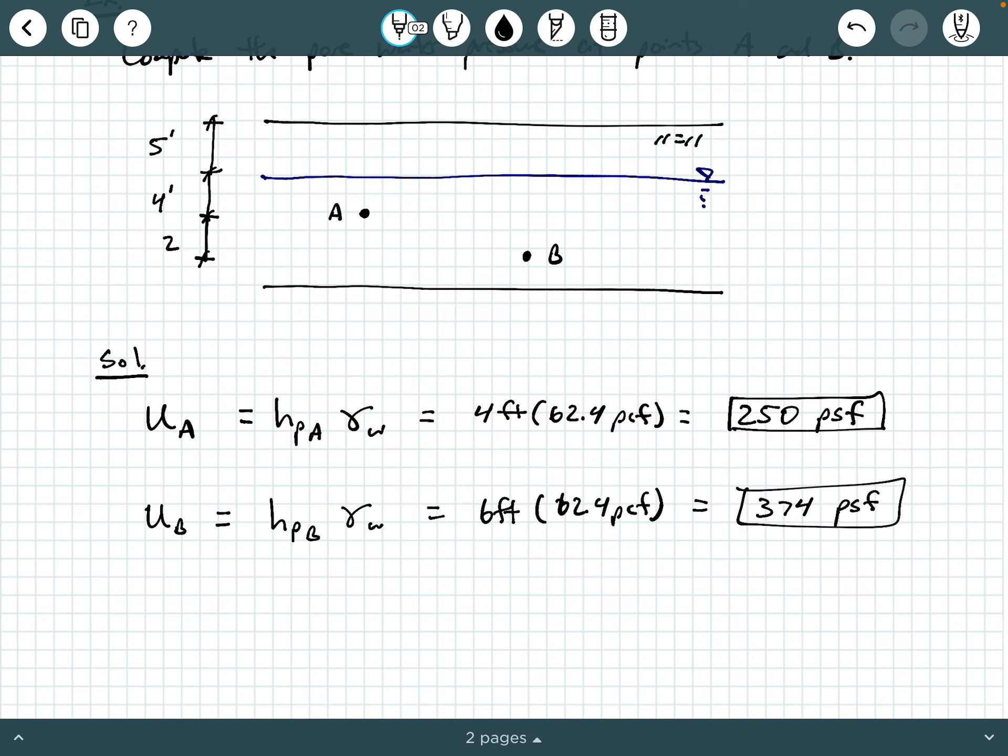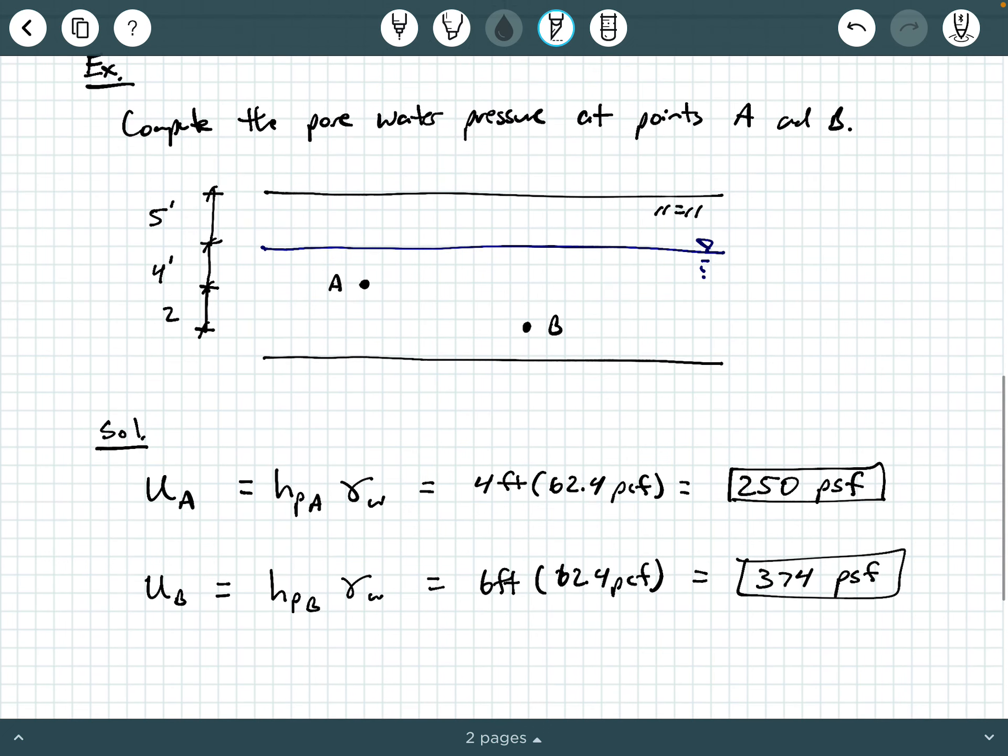Now, a couple other things to remind ourselves. First, this 5 feet of soil above the groundwater table did not come into play because we're looking for the pore water pressure, which is the pressure due to water above a particular point.